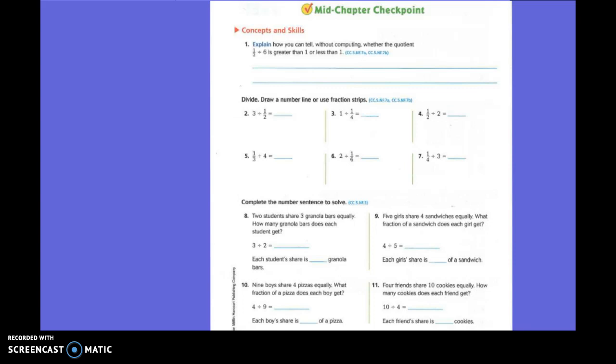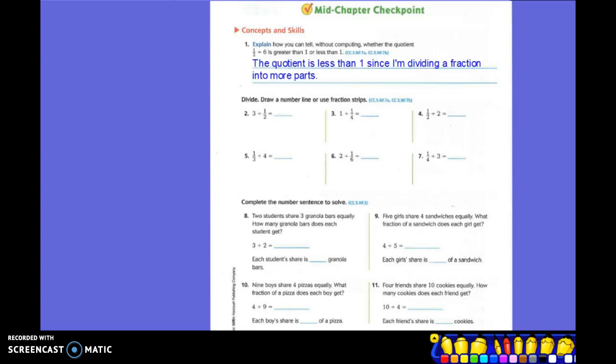So we're going to have pieces that are 1/12th. 1/12th are smaller than 1. So written in words, it might sound like the quotient is less than 1 since I'm dividing a fraction into more parts.